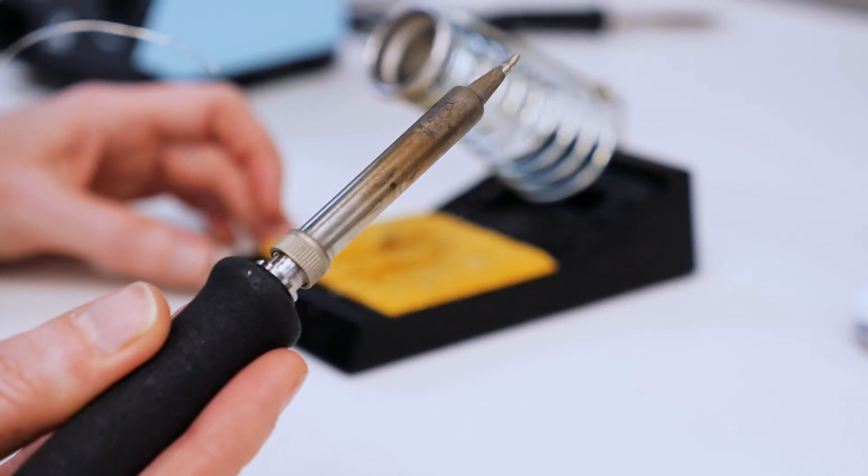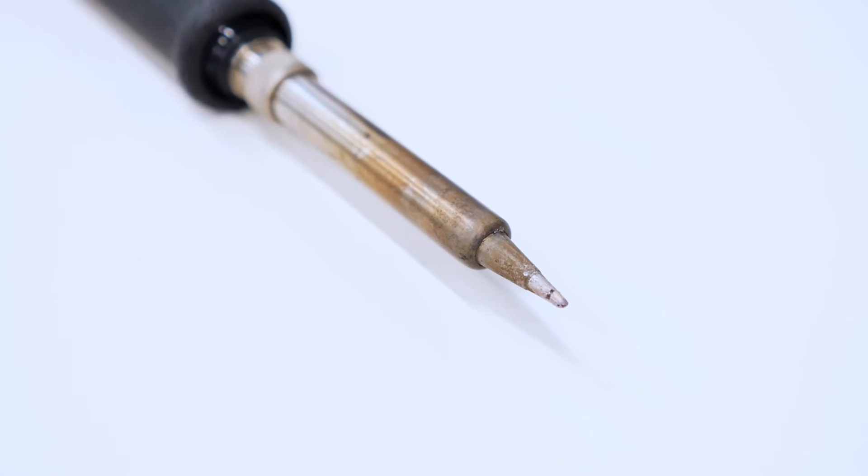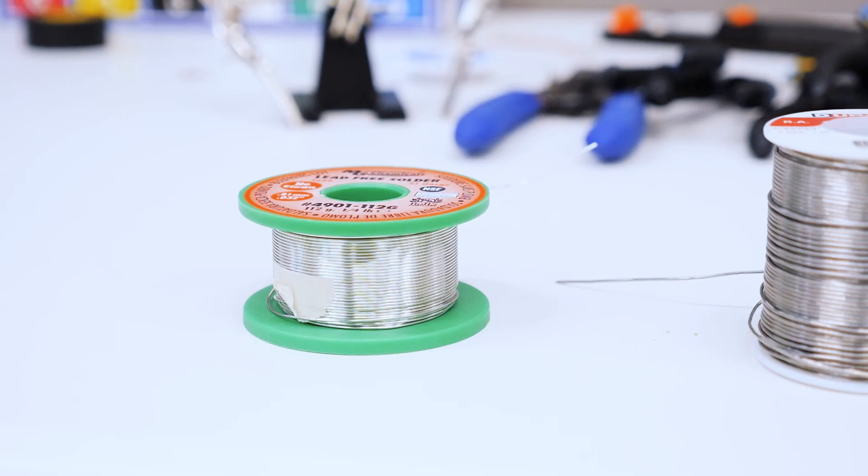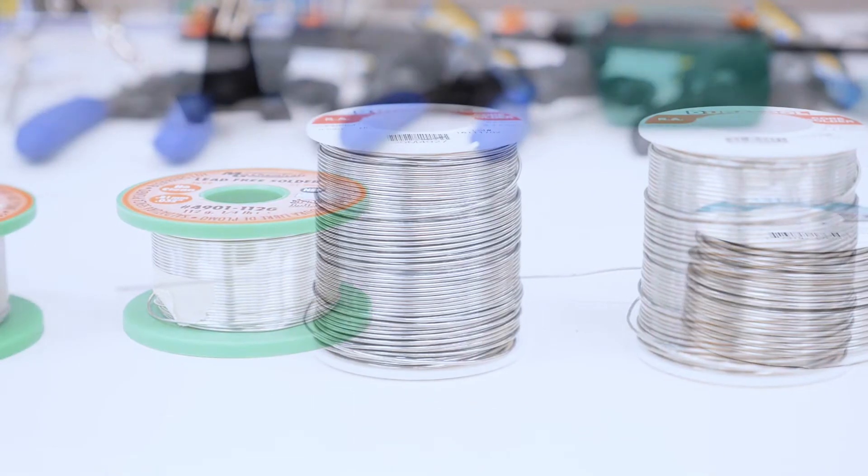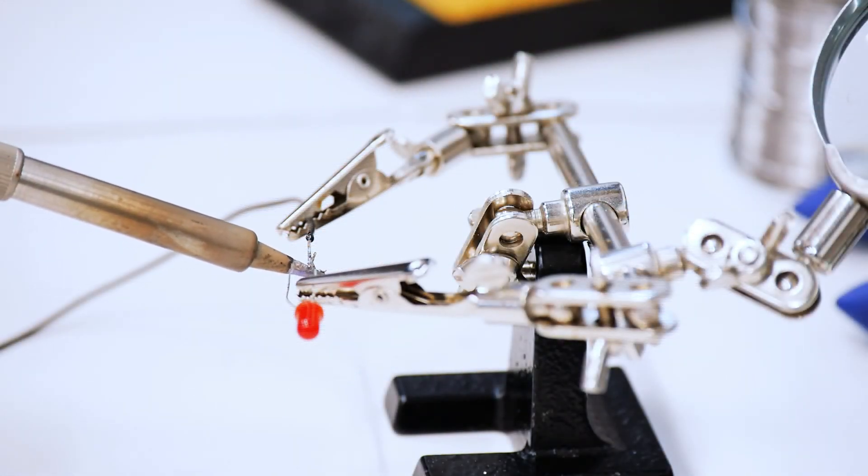Soldering tips come in different sizes and shapes for different applications. Common tip shapes you may encounter are conical or fine point, chisel or flat, and bevel or hoof. Solder also comes in different sizes and compositions. You should consult your instructor or a technician for advice about the appropriate soldering tip and solder to use for your application.